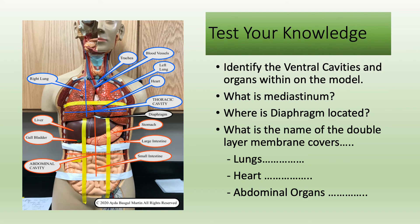Let's test your knowledge. Can you identify the ventral cavities and organs within the torso model? Make sure to watch my major organs and their locations video to support this knowledge. What is the mediastinum? A central compartment within the thoracic cavity between the lungs. Where is the diaphragm located? Between the thoracic and abdominal cavities. What is the name of the double-layered membrane that covers the lungs? Pleura — the inner layer is the visceral pleura and the outermost layer is the parietal pleura.